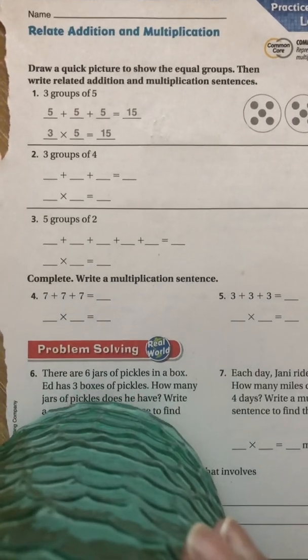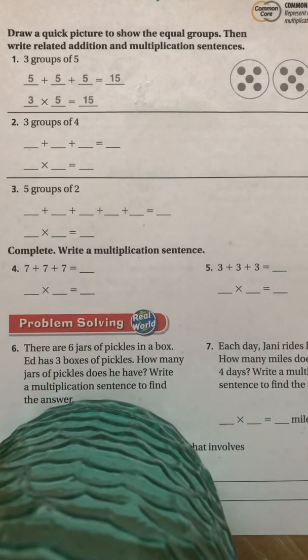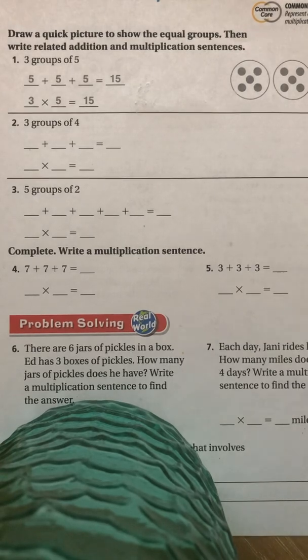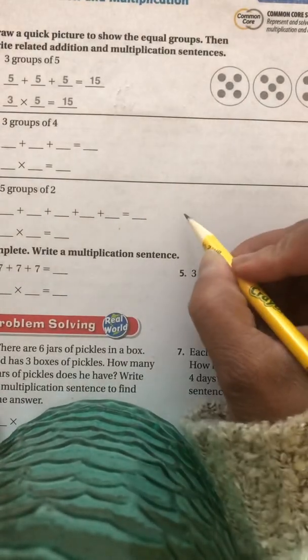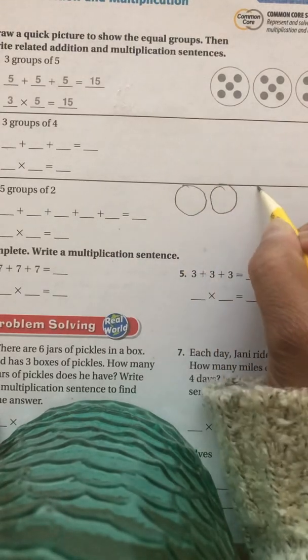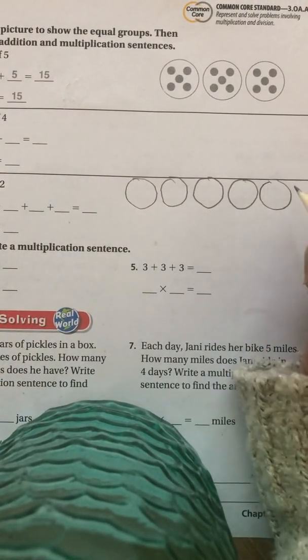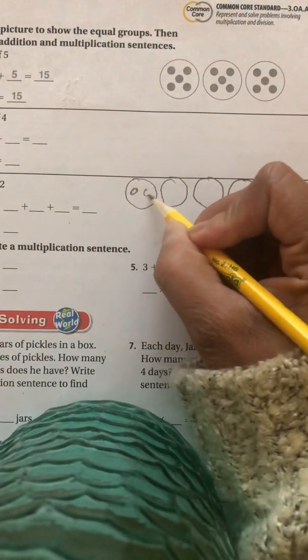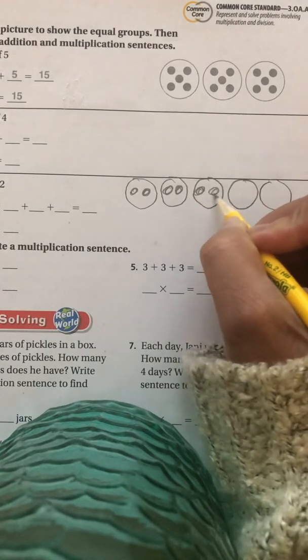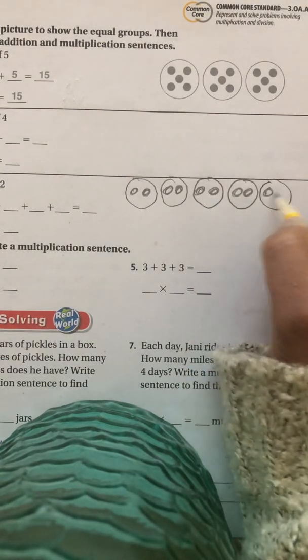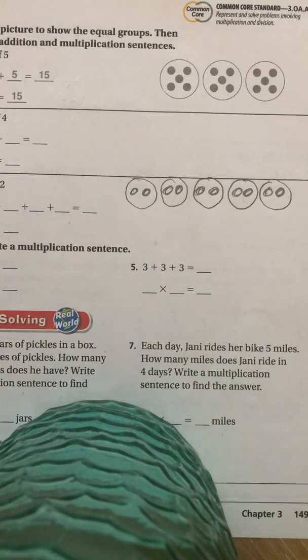So we're going to do that again. Let's go down to number three — I'm going to do some of them, but not all. Number three says five groups of two. So over here to the right, I'm going to make my five circles: one, two, three, four, five. And it said five groups of two, so we're going to put two circles in each group. And obviously I can use repeated addition — I could even skip count by two — and I can write a multiplication equation to go along with that model.